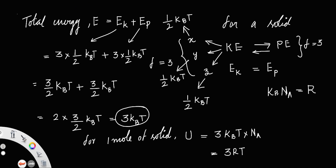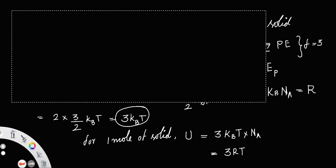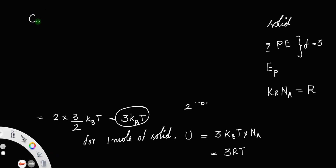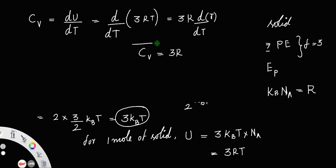Now, in order to find the molar specific heat capacity at constant volume, that is Cv, the equation is the derivative of internal energy with respect to temperature: Cv equals d/dT of U equals d/dT of 3RT. Since 3R is a constant, this gives Cv equal to 3R. This means the molar specific heat capacity at constant volume of a solid is 3 times the universal gas constant.